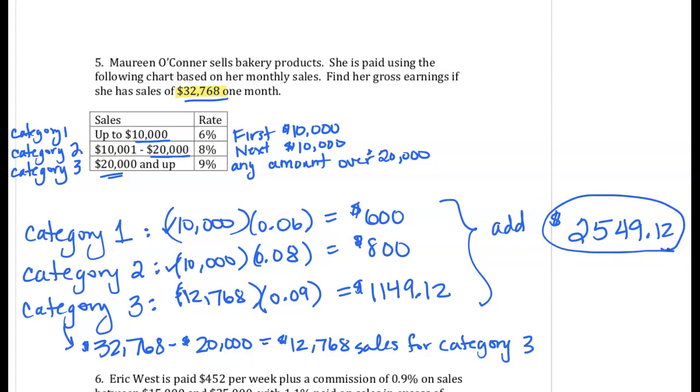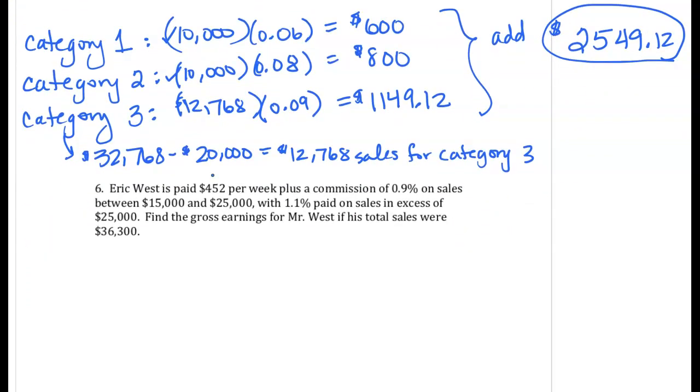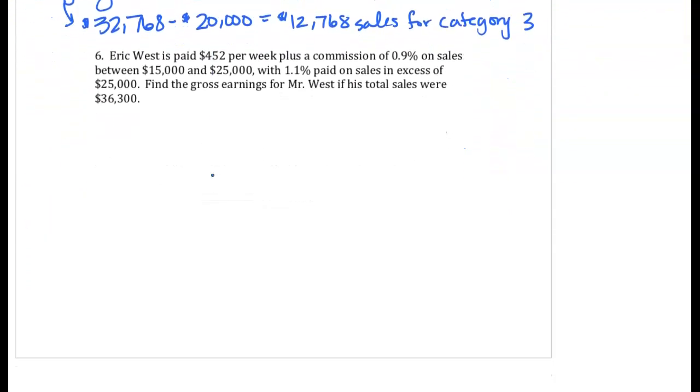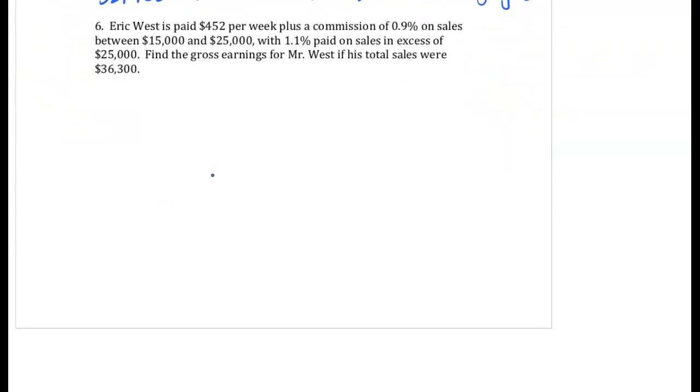Question 6 is very similar to question 5, only they aren't listing the categories in a table or chart. They're actually just listing them in words within the word problem. So we'll make our own chart. Eric is paid $452 per week, plus a commission of 9% on sales between $15,000 and $25,000. So let me go ahead and say our Category 1 is our sales from $0 to $15,000. But there we get no commission.